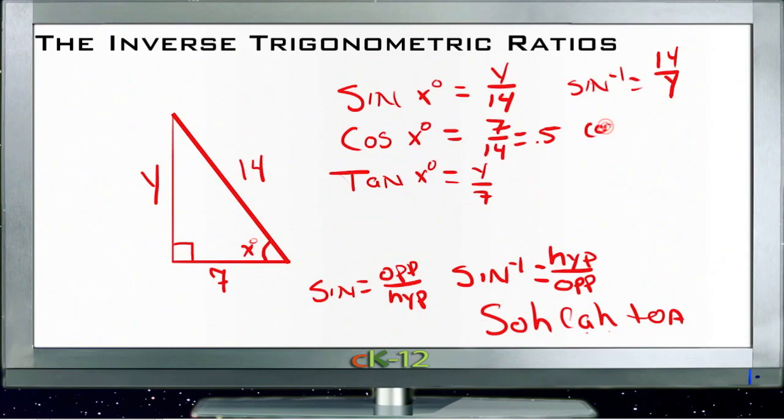And the inverse cosine would be 14 over 7 or 2. And the inverse tangent would just be 7 over Y. So pretty straightforward, really.